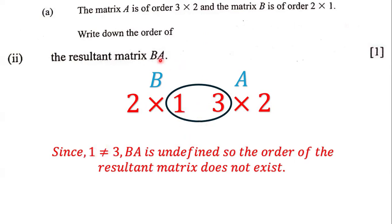B times A — we cannot multiply those two matrices in that way. The matrix product is undefined because these two inner numbers are not equal, so the order of the resultant matrix does not exist. That's the answer for this particular question.